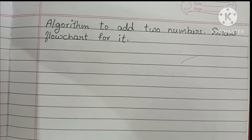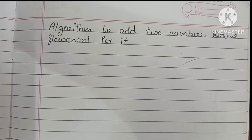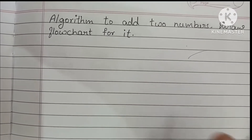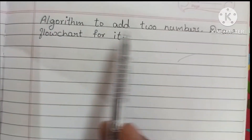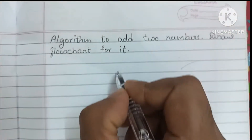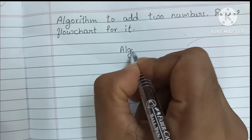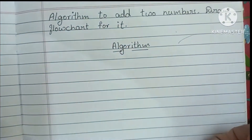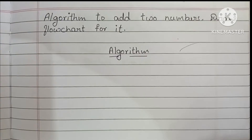Hi guys, in this video we are going to learn how to write an algorithm to add two numbers and draw a flowchart for it. Here we are going to find the sum of two numbers. An algorithm is a step-by-step process to solve a problem.